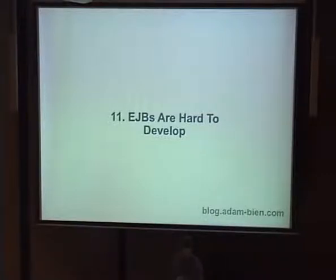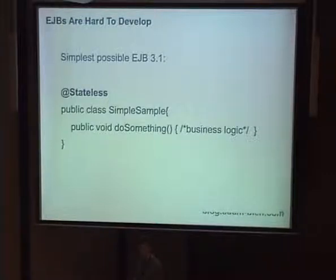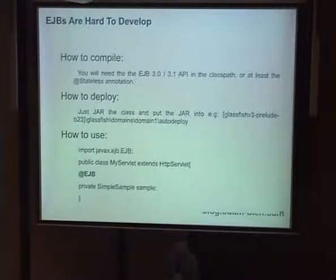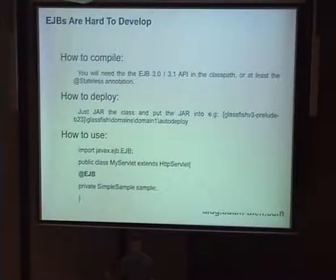The last point is how to develop. In EJB 3.1, the simplest possible EJB is just a class with the Stateless annotation — you only need that one annotation. Without it you'd need an XML deployment descriptor, which I don't like, so from my perspective this is the simplest possible. To compile, you only need the Stateless annotation in your classpath, then compile with javac. To deploy, you only need a jar archive — put it in the auto-deploy folder for Glassfish or JBoss and it's deployed. No wizards, no XML deployment descriptors needed.